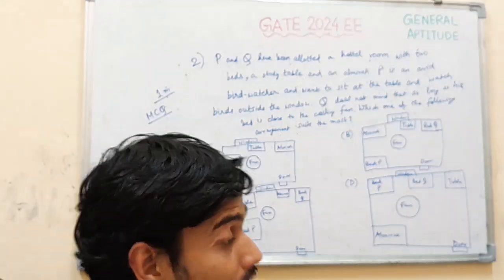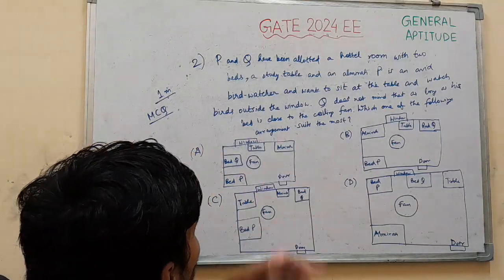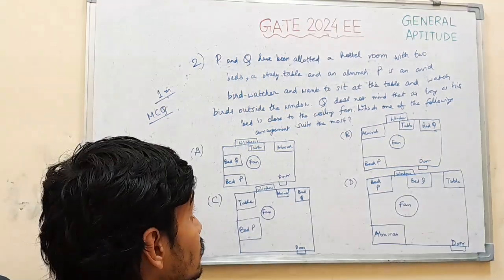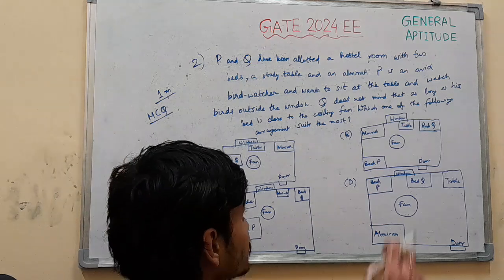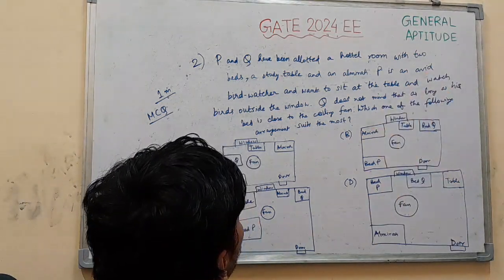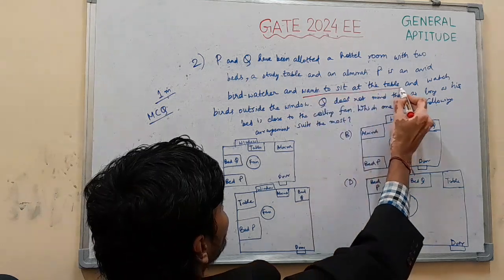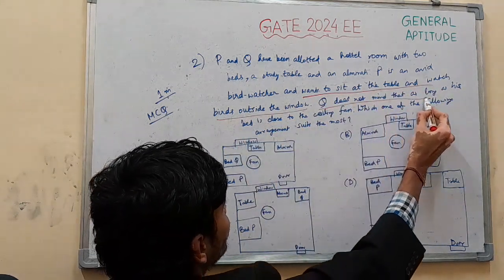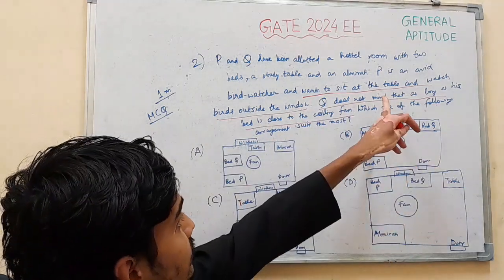This is a good arrangement as we have seen in the hostel room. So here are two conditions. Let's highlight the points we have to satisfy. P wants to sit at the table and watch birds outside the window. Q does not mind as long as his bed is close to the ceiling. Basically we have to satisfy these two conditions.